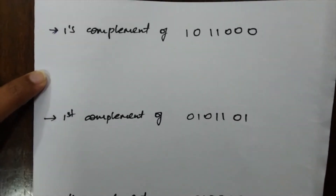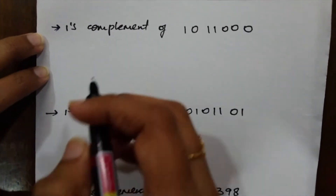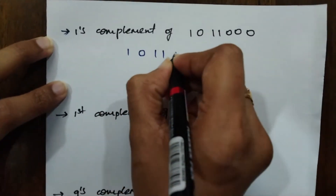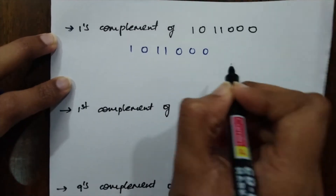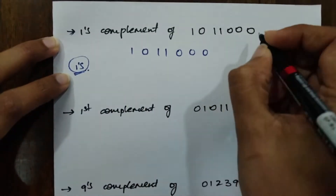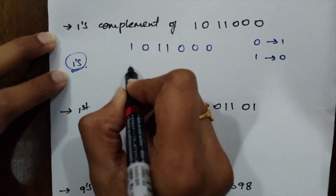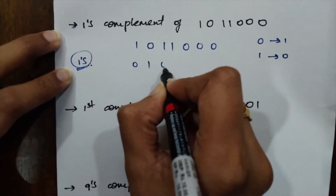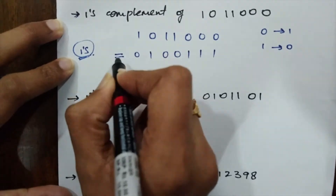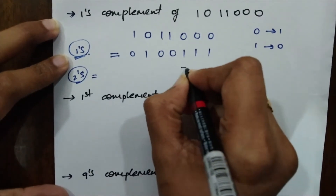Now let's look at examples of how to find the 1's complement and 2's complement for a given binary string. The number given is 1011000. To find the 1's complement, simply invert each digit: for 0 it becomes 1, for 1 it becomes 0. So 1→0, 0→1, 1→0, 1→0, 0→1, 0→1, 0→1. The 1's complement is 0100111.